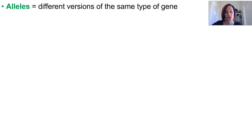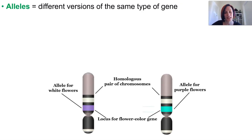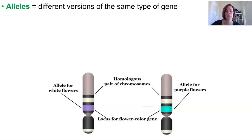Variation can be caused by different versions of the same genes and these are known as alleles. We might be referring to any of our given physical traits like hair colour or eye colour, but we also have to remember that it's also about microscopic things like the types of enzymes and proteins that our genetic instructions produce.